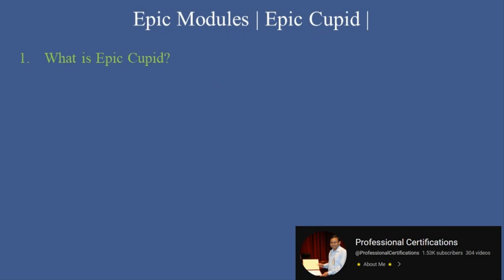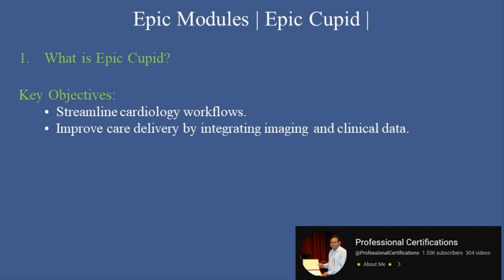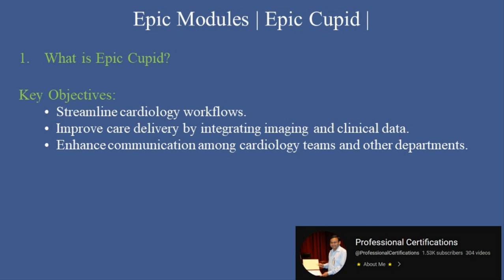What is Epic Cupid? Epic Cupid is Epic's cardiology module, designed to support cardiology departments by integrating diagnostic imaging, clinical documentation, and reporting into a unified system. Key objectives include: streamlining cardiology workflows, improving care delivery by integrating imaging and clinical data, and enhancing communication among cardiology teams and other departments.